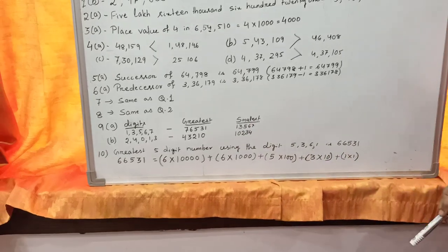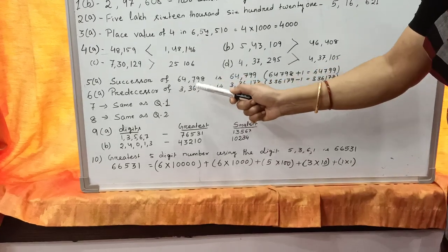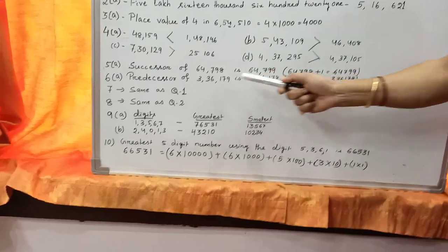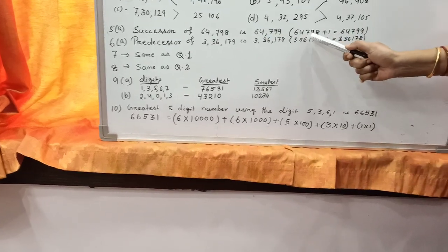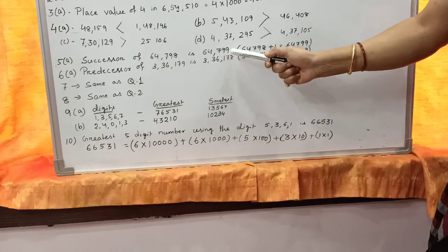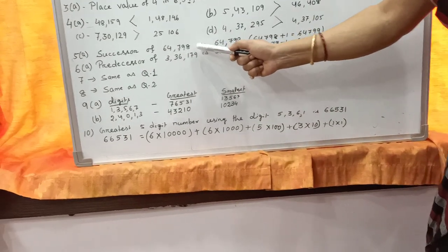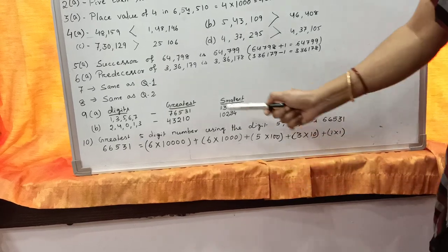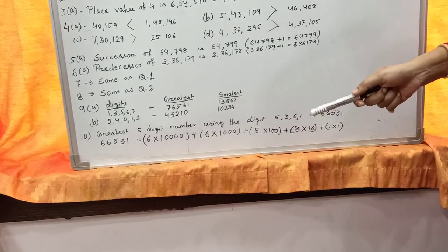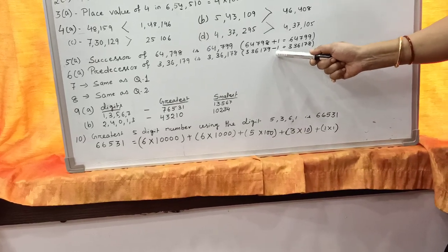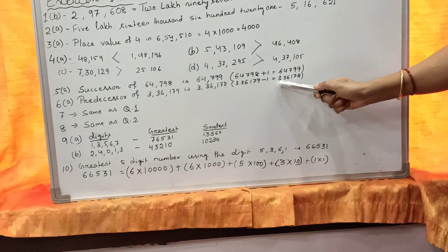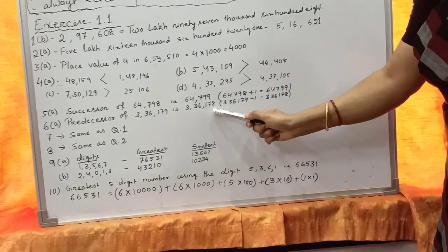Question No. 5: write the successor of 64,798. Successor means the next number. To find the successor, add 1 to the given number. So 64,798 + 1 = 64,799. So 64,799 is the successor of 64,798. Similarly, Question No. 6: write the predecessor of 3,36,179. Predecessor means the previous number. To find the predecessor, subtract 1 from the given number. So 3,36,179 − 1 = 3,36,178.